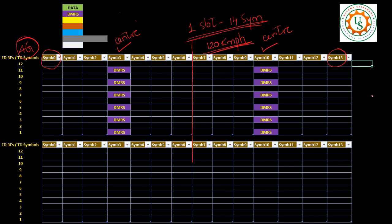Now coming to 5G — in case of 5G, almost all the configurations are made flexible, not only with respect to DMRS but with respect to many other aspects as well. Regarding DMRS allocations, it was made flexible and we have more configurations with respect to DMRS allocations.